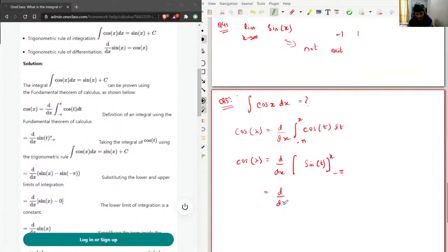This will be d/dx of sine x minus sine of negative pi. Now sine of 0 is 0, sine of pi is 0, so sine of negative pi is also 0, so this term will be 0.